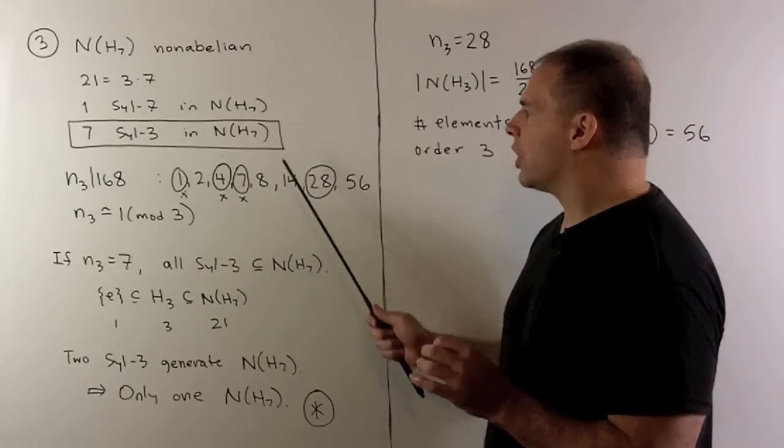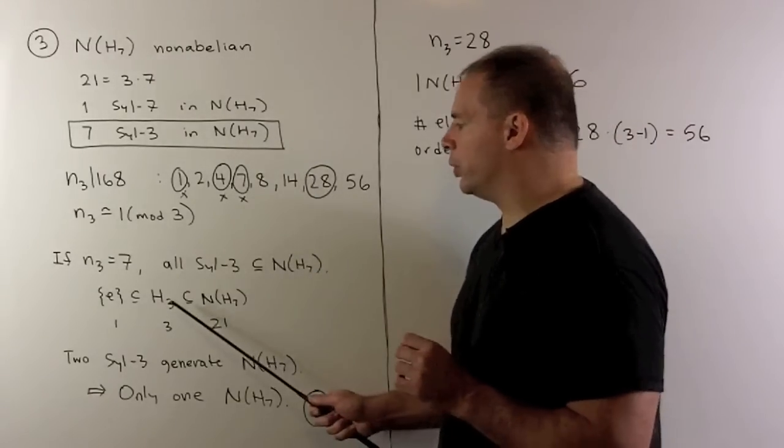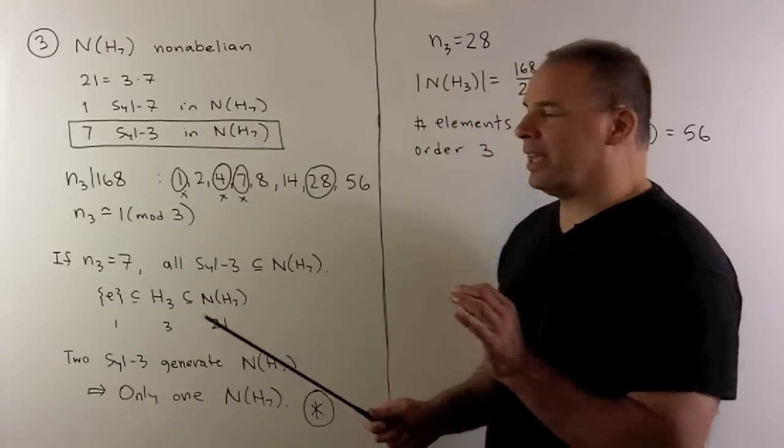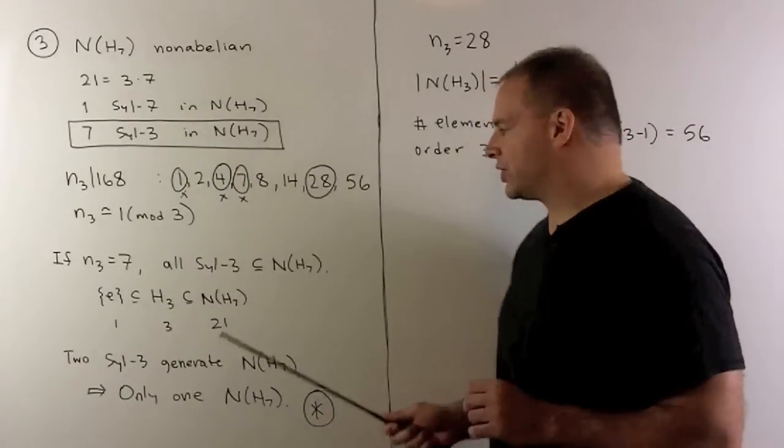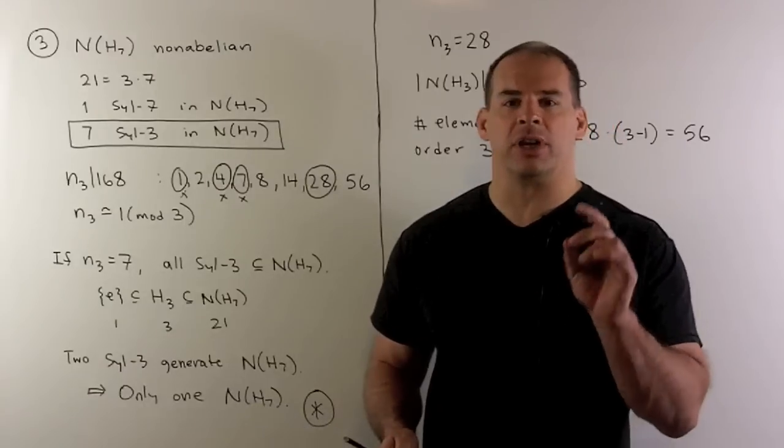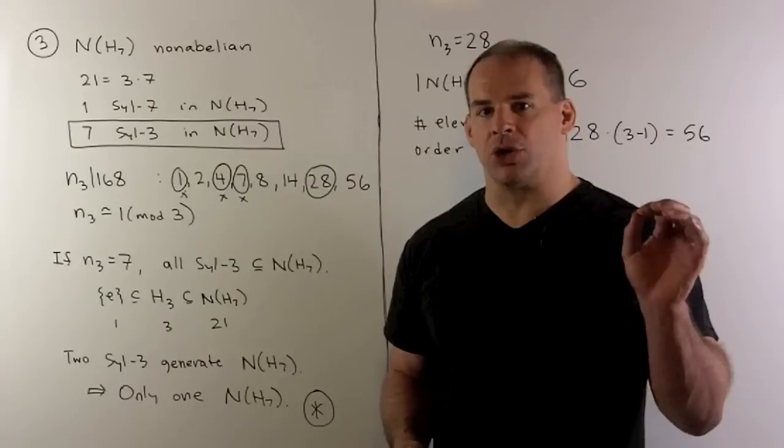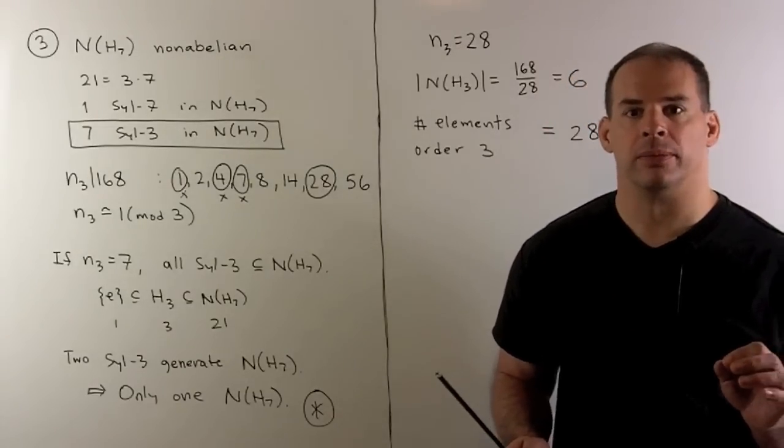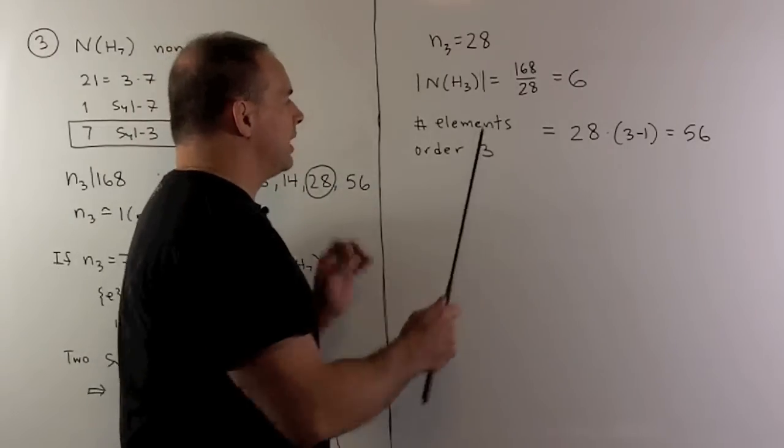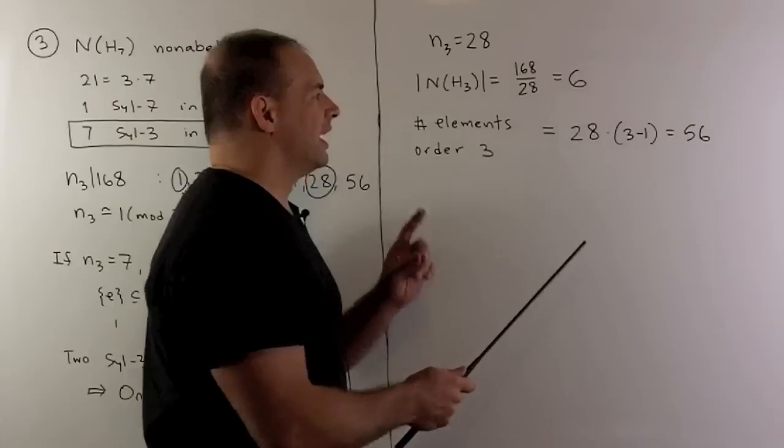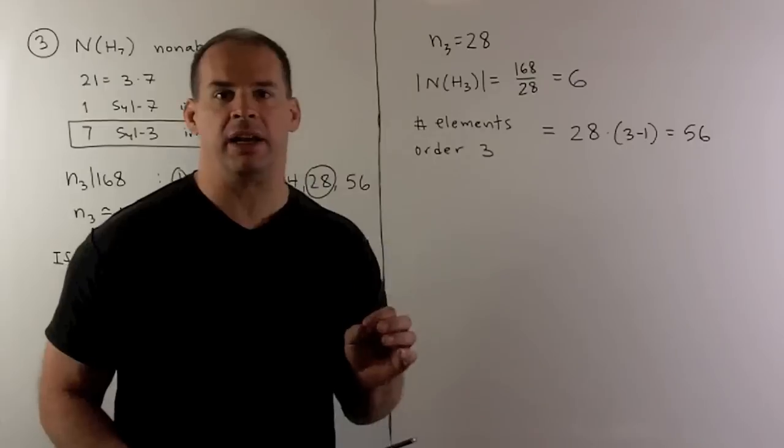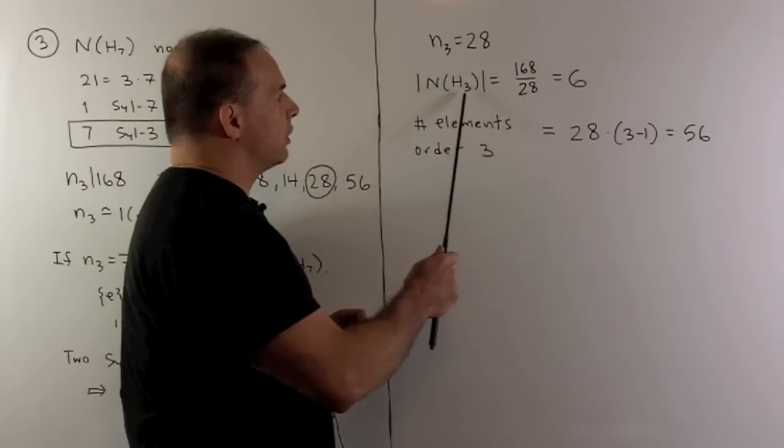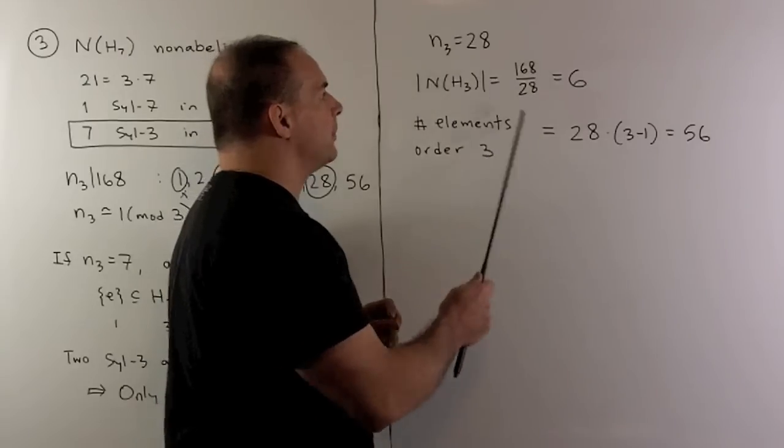That means all of our Sylow 3s are contained in this normalizer. If we consider this inclusion, so we have given Sylow 3 containing the normalizer. There are no intermediate subgroups. So, that means any two Sylow 3s are going to generate this subgroup. That's a problem because that'll say that there can only be one normalizer. We know that there's 8, so I get a contradiction. So, that means we're going to have to have 28 equal to n sub 3. Now, with that, we can count the number of elements of order 3. So, we have 28 subgroups times two elements. So, 3 minus 1 because we throw away the identity to get 56 elements. We also have the order of the normalizer of a Sylow 3. It's going to be 168 divided by our 28. So, we get a 6.